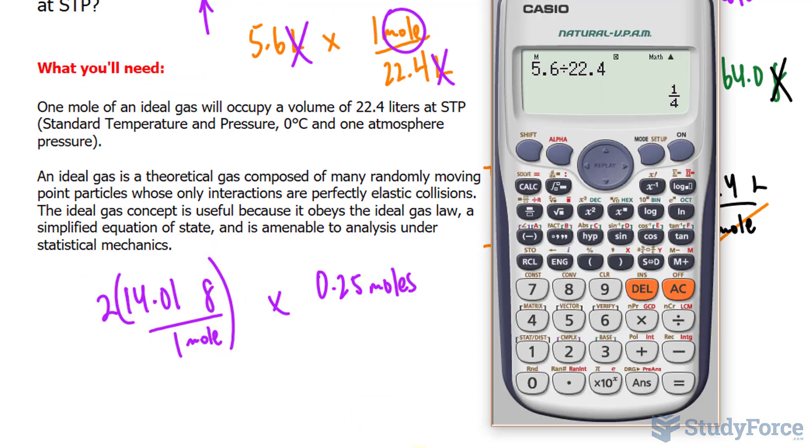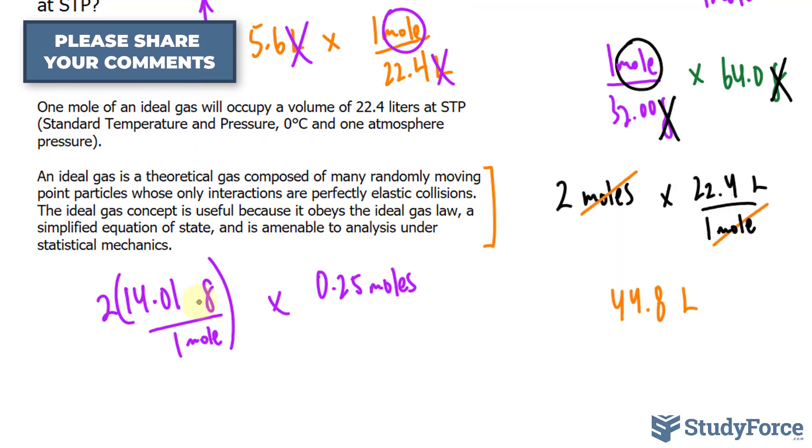And we multiply it to 0.25. Look what happens. So, two times 14.01, that's the molar mass of N2. There it is in decimal. Times 0.25. The mole unit will cancel out,